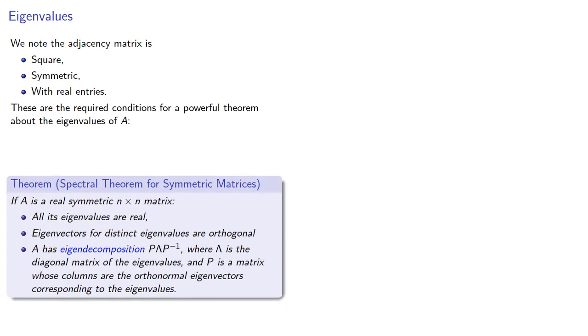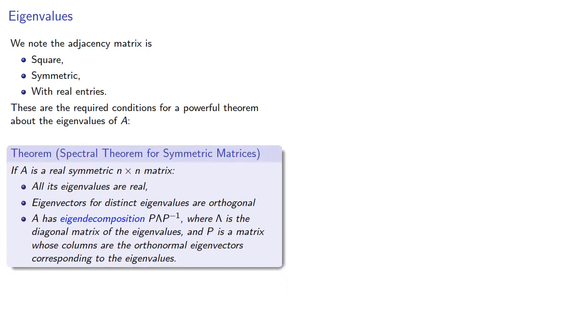If A is a real symmetric matrix, all of its eigenvalues are real, eigenvectors for distinct eigenvalues are orthogonal, and A has an eigen decomposition that looks suspiciously like our formula for orthogonal equivalence.